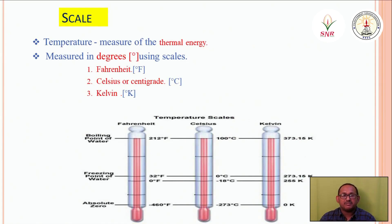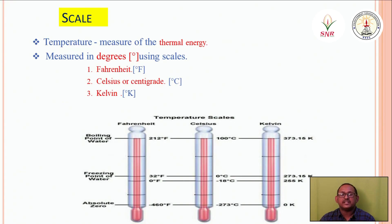Temperature scales include Fahrenheit, Celsius, and Kelvin. The boiling point of water is 100°C, 212°F, and 373 K. The freezing point of water is 0°C, 32°F, and 273 K.